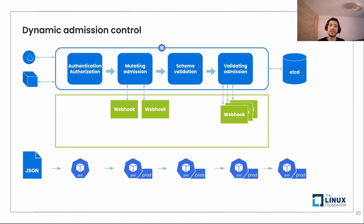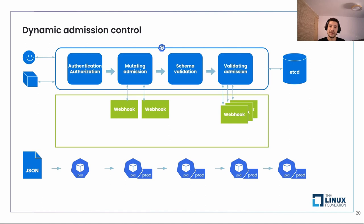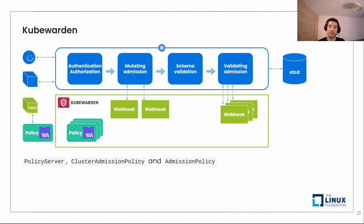To implement your own admission webhook, you need to implement an HTTPS server — HTTP is not supported. You need to create certificates, pass the certificate authority to the webhook validating object, and provide an endpoint for each webhook. You also need to create the webhook configuration object, which can be either validating or mutating. That seems like a lot of work, but there are open source tools called policy engines that help with this process. Today we're going to talk about Kubewarden.